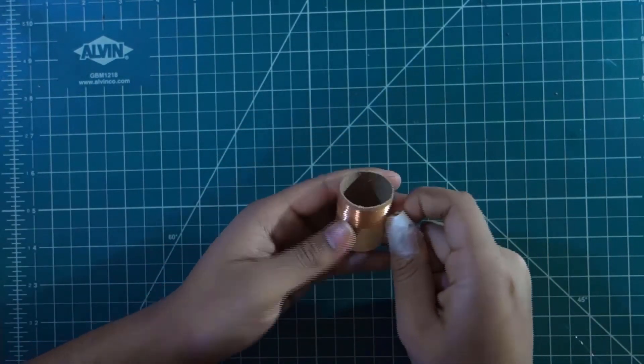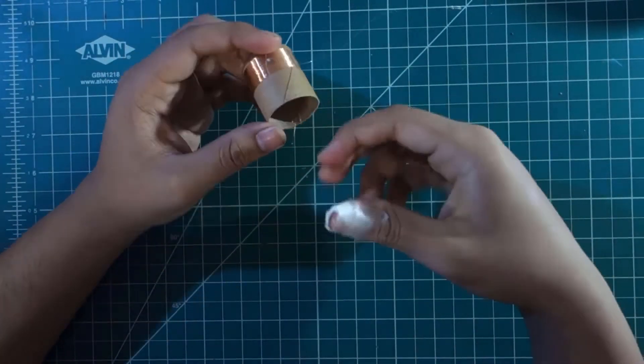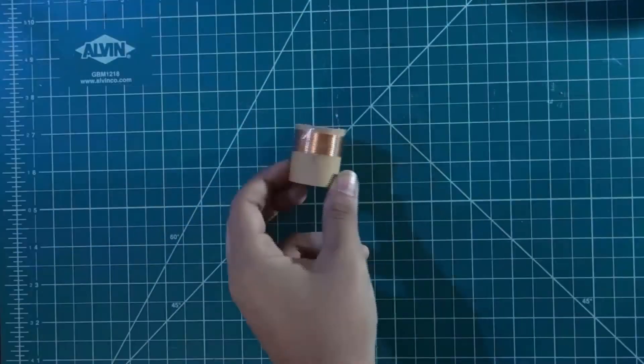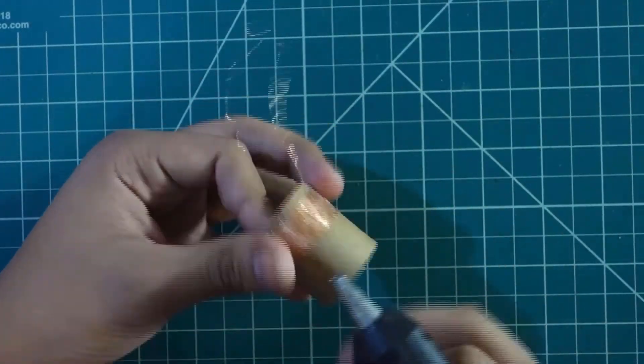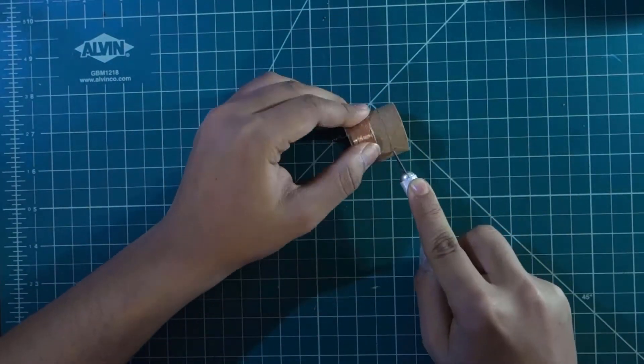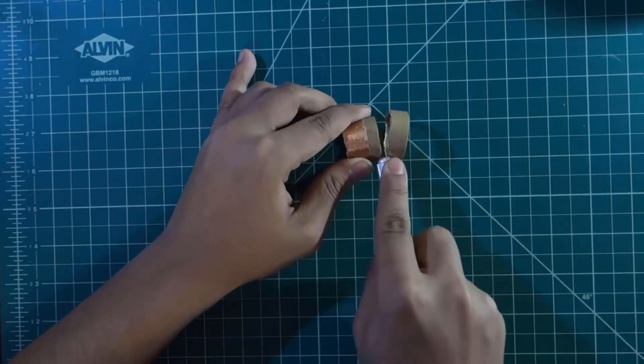When you're done coiling, leave about two inches on the end again. Use glue to keep the wire in place if needed.